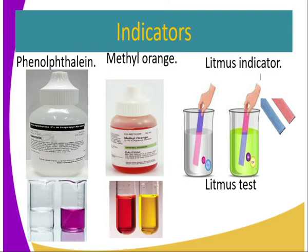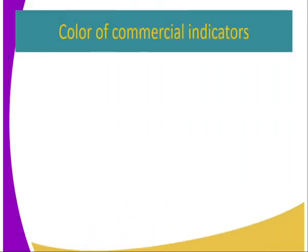Whereas a red litmus paper will remain red in an acidic solution. And a red litmus paper may turn blue to indicate that the substance is basic. A blue litmus paper will remain blue in an alkaline or basic substance.